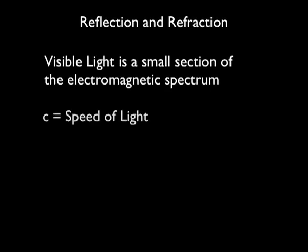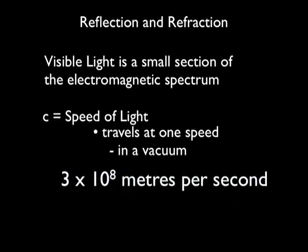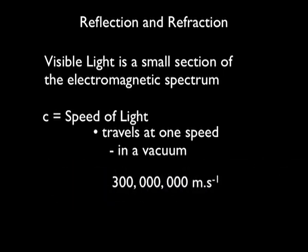Visible light is a particular region of the electromagnetic radiation spectrum. All light travels with one speed in a vacuum, 3 by 10 to the 8 metres per second. The symbol for speed of light is lowercase c, the wave model.